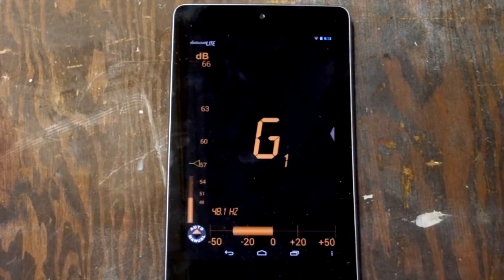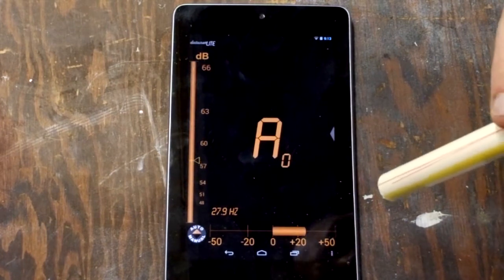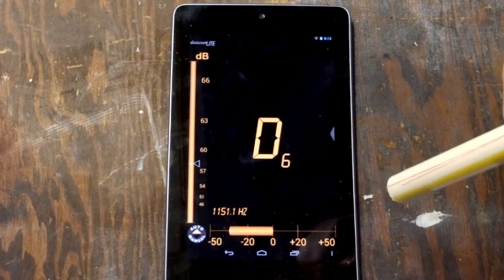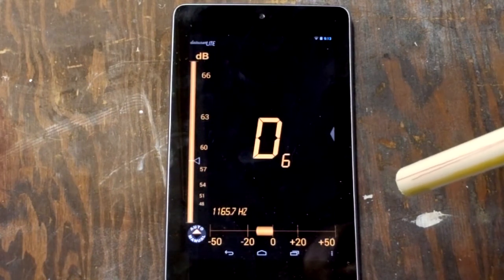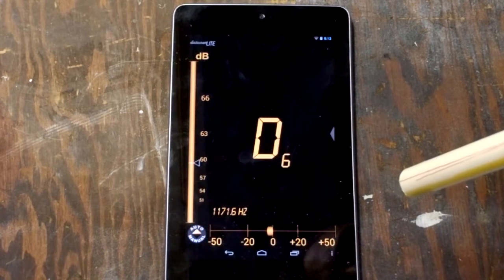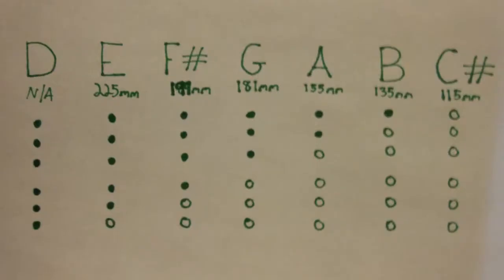I downloaded a free tuner app on my tablet. Blowing into the whistle should produce a note near D. You can see here mine's a little bit flat. I shaved about one millimeter at a time off the bottom of the whistle. This slowly raises the pitch. That's much better.